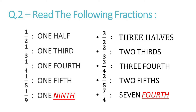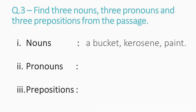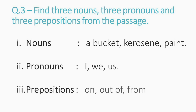Now question number three: find three nouns, three pronouns, and three prepositions from the marbling passage. From the passage, I have identified the three nouns as: bucket, kerosene, and paint. The three pronouns are: I, we, and us. And the three prepositions are: on, out of, and from. This is how you will solve question number three.